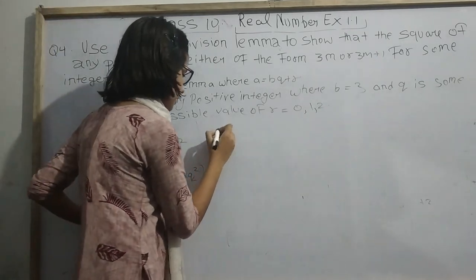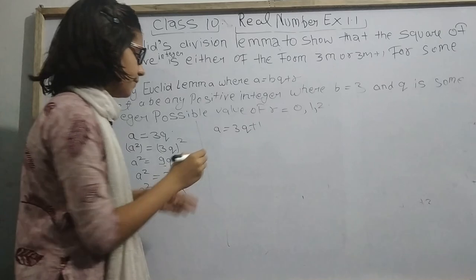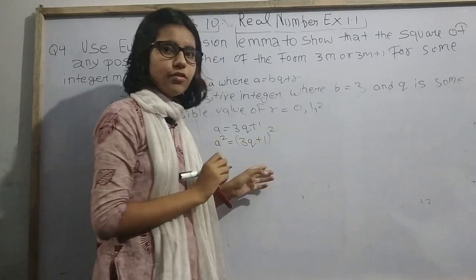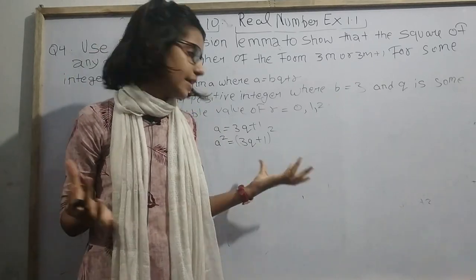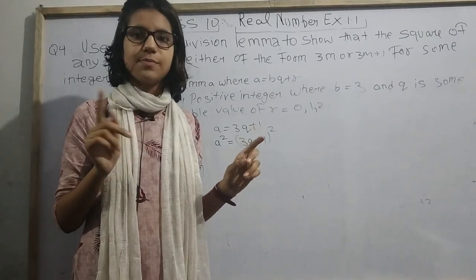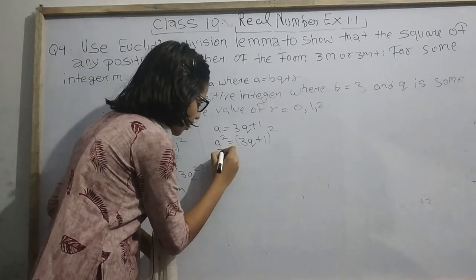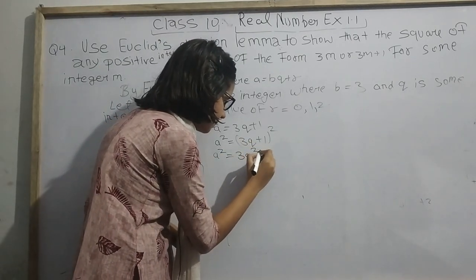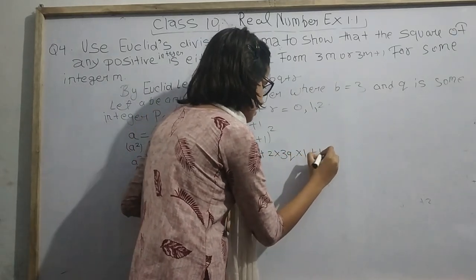Now let us move to A equals 3Q plus 1. Square both sides. A square equals 3Q plus 1 whole square. We learned about A plus B whole square in class 7th. That is A square plus 2AB plus B square. In maths, each point is connected. So we can write 3Q square plus 2 into 3Q into 1 plus 1 square.